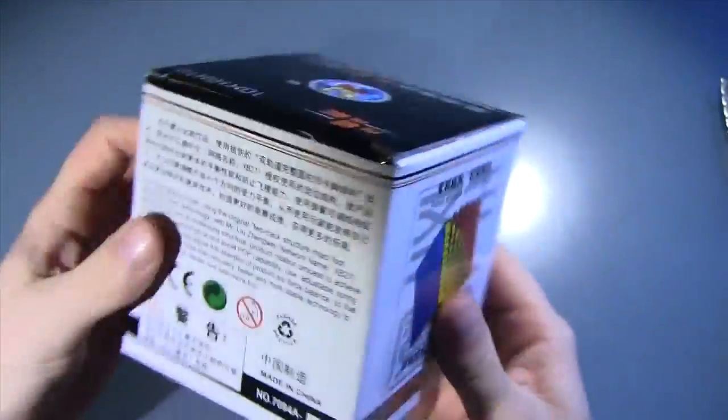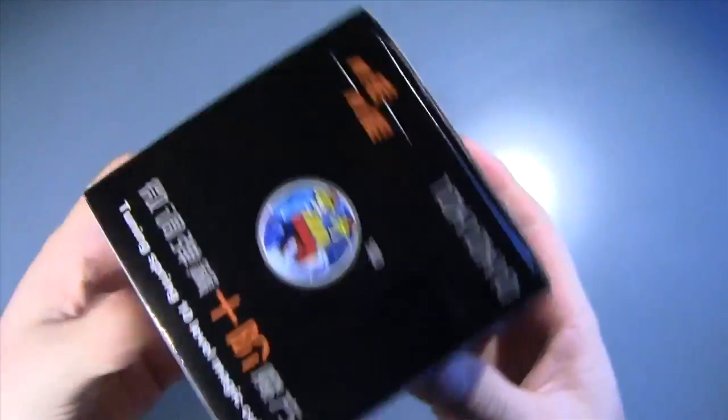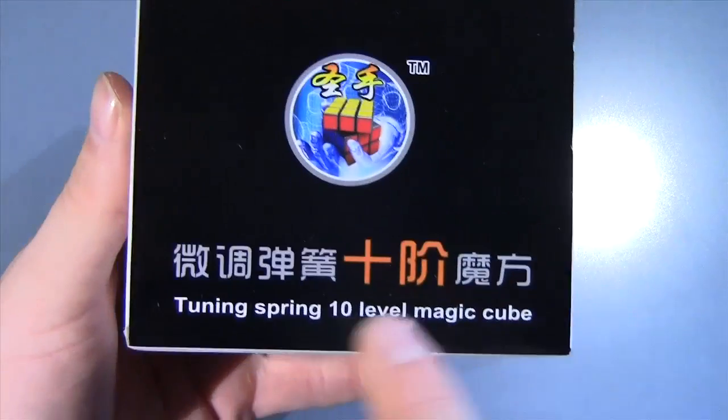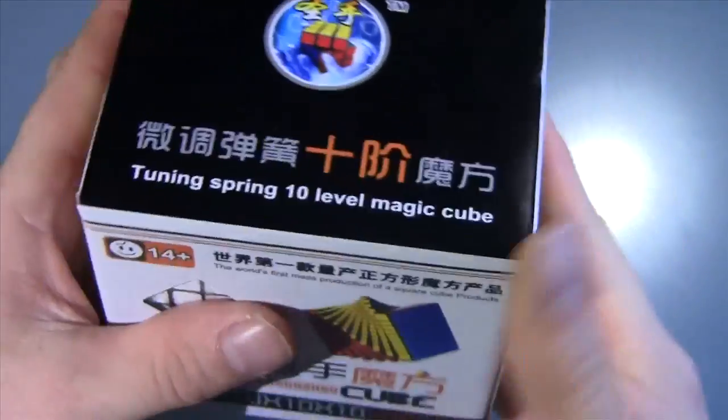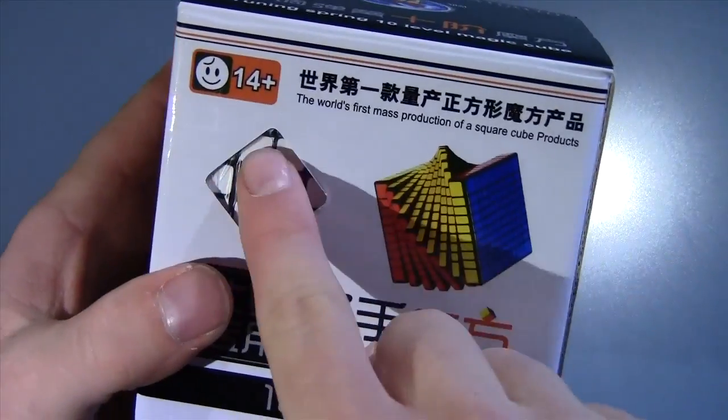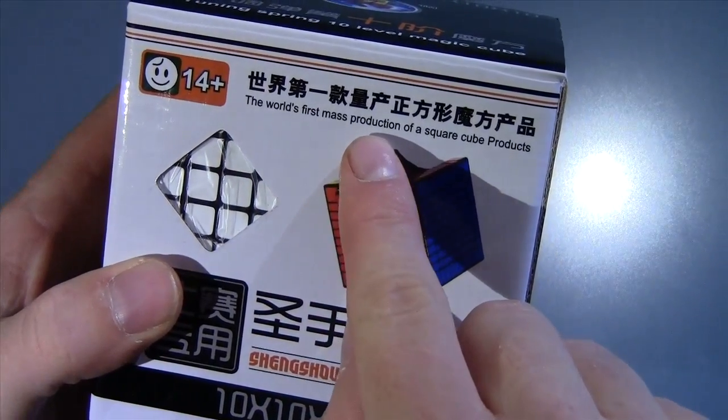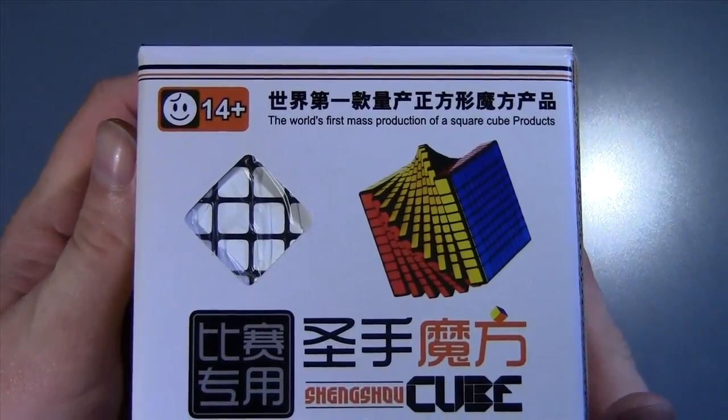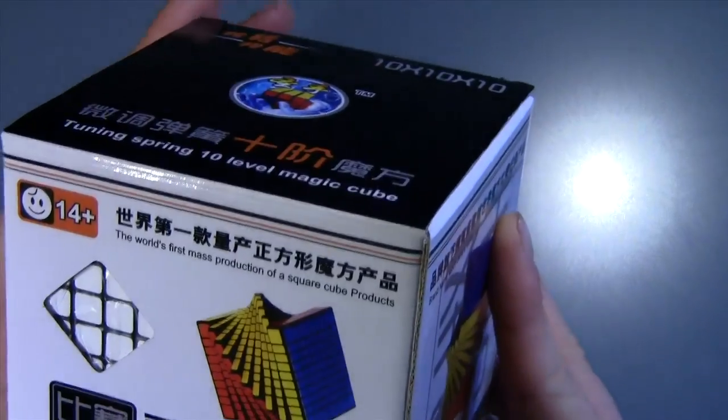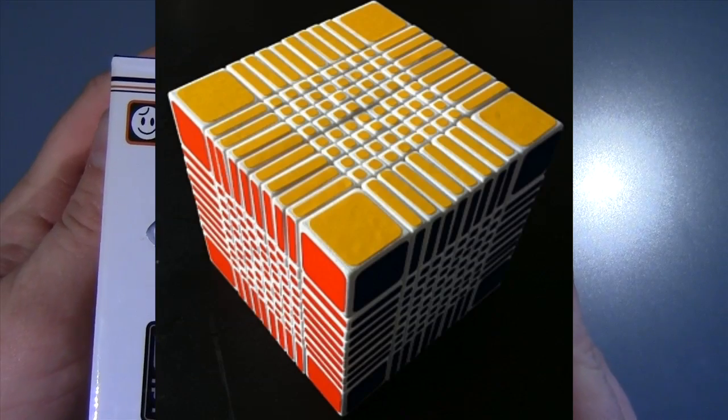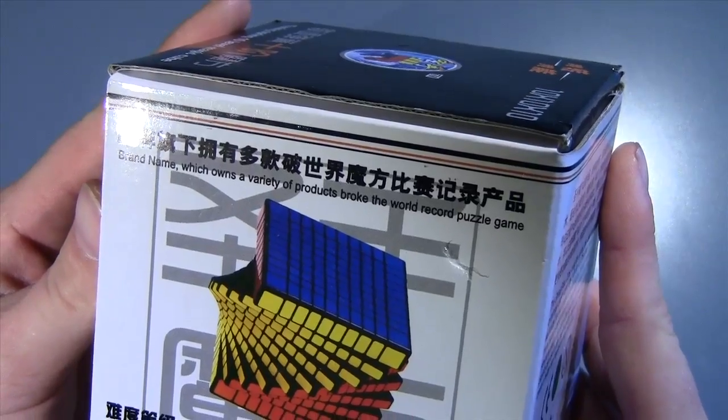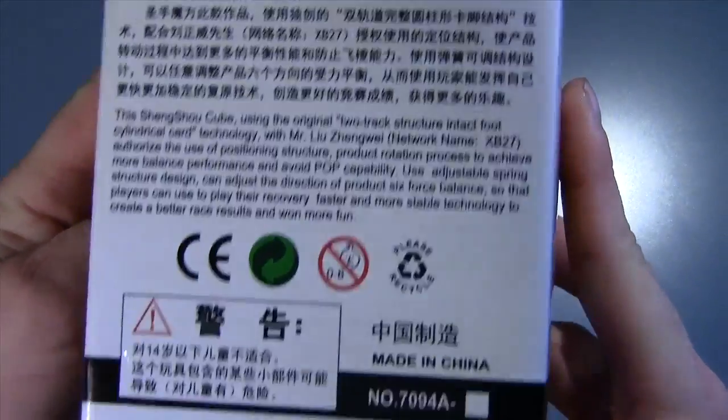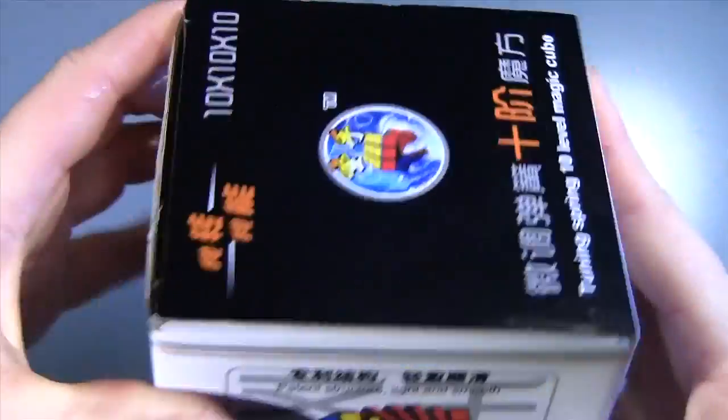That's already pretty heavy I have to say. The box says 10x10, turning spring 10 layer magic cube. I wonder why they always call it a magic cube. Here we can see the size of the cubies. World's first mass-produced production of a square cube product. I'm guessing they're 10x10. Now this is not the very first square 10x10, that was actually designed by Gregoire, and that's been out for quite a while.